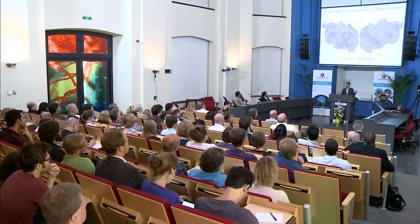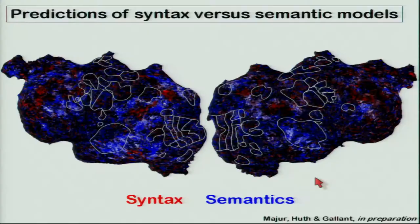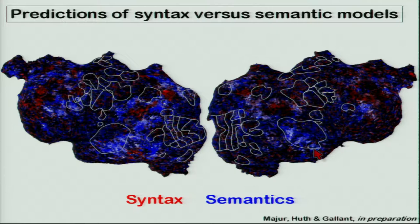We fit both the syntactic and semantic models to every voxel and project the predictions onto flat maps. Here we have the left and right hemispheres, with raw prediction values scaled from 0 to 0.7 — about the best correlation we get. Red indicates locations where the syntax model fits well, blue where the semantic model fits well, and white where both fit well. Primary auditory cortex is not well fit by either model — that's where spectral and phonemic models fit — but in higher-order auditory cortex on the ventral side of the temporal lobe, both models fit well. The temporal parietal junction seems well fit by the syntax model.